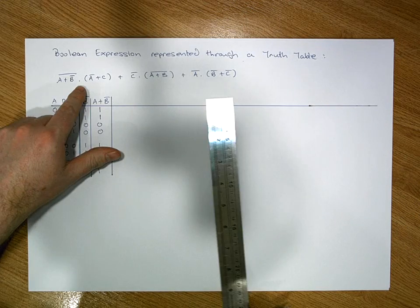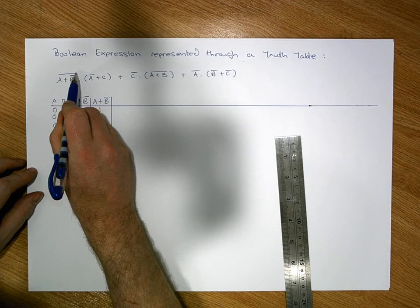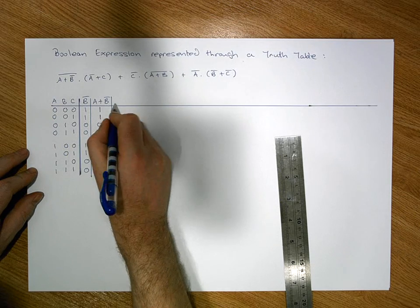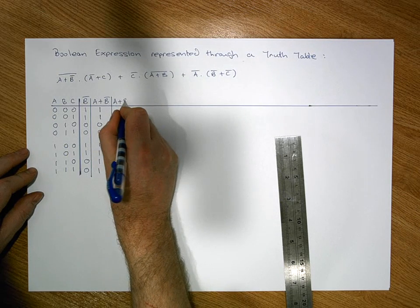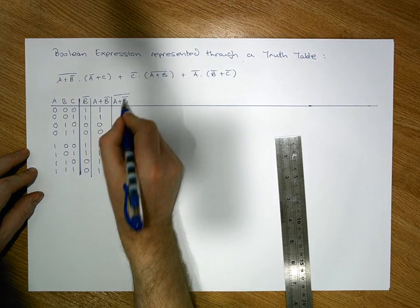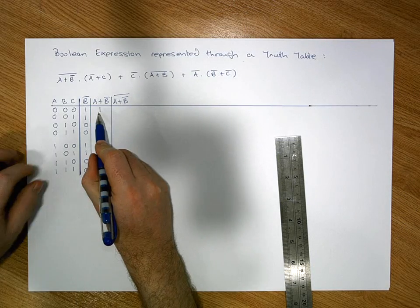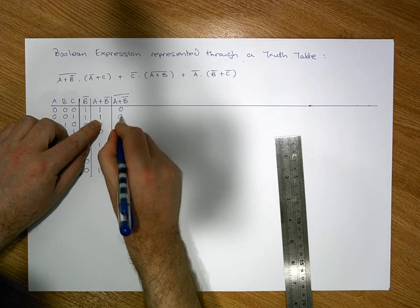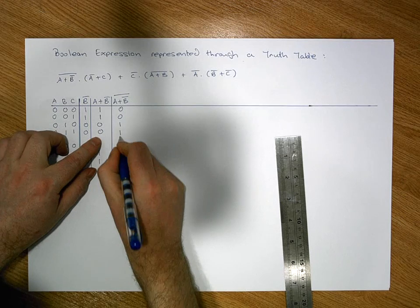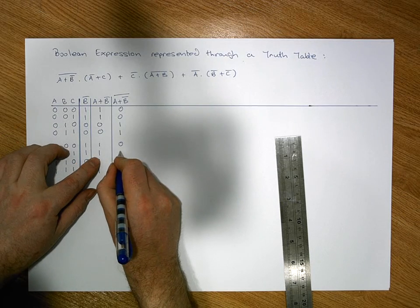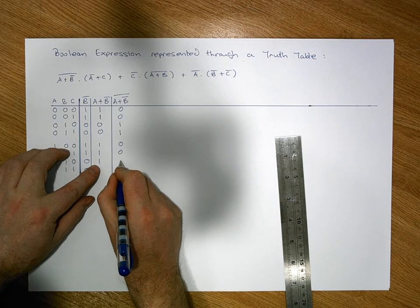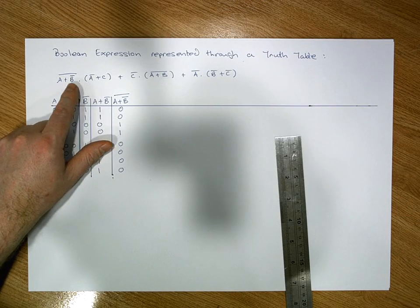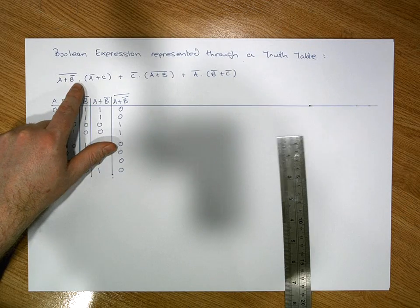Before we can do the AND, we need to negate the (A OR B̄) result. So we take that column and negate it: ones go to zeros, zeros go to ones, ones go to zeros, ones go to zeros. That gives us the left-hand operand for this AND.